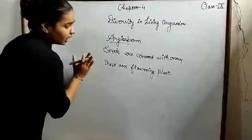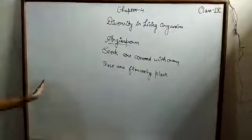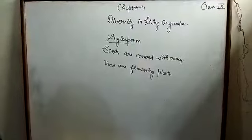These are monocot and dicot. These are two types of angiosperms.